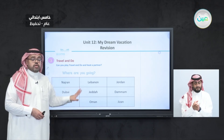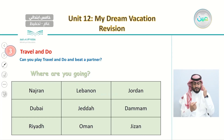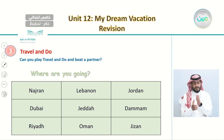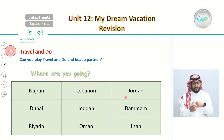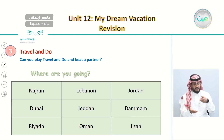Let's first read and listen to the words we have in this table, and then we can continue and know how to answer. So here we have places like Najran, Dubai, Riyadh, Lebanon, Jeddah, Oman, Jordan, Dammam, and Jizan. These are the different cities and places that we can choose when we talk about where you are going.